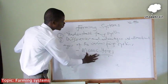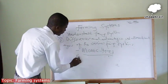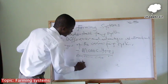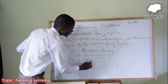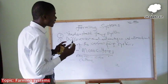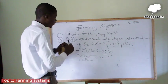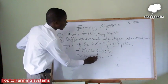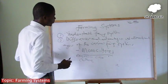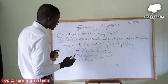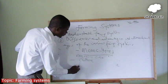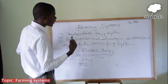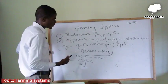First of all, we have monoculture. Mono means one and culture refers to something that has been repeatedly done till it becomes part and parcel of a particular group of people's life. So when we talk about monoculture as a system of farming, we mean that a farmer takes a particular food crop and specializes in it and farms it year after year.